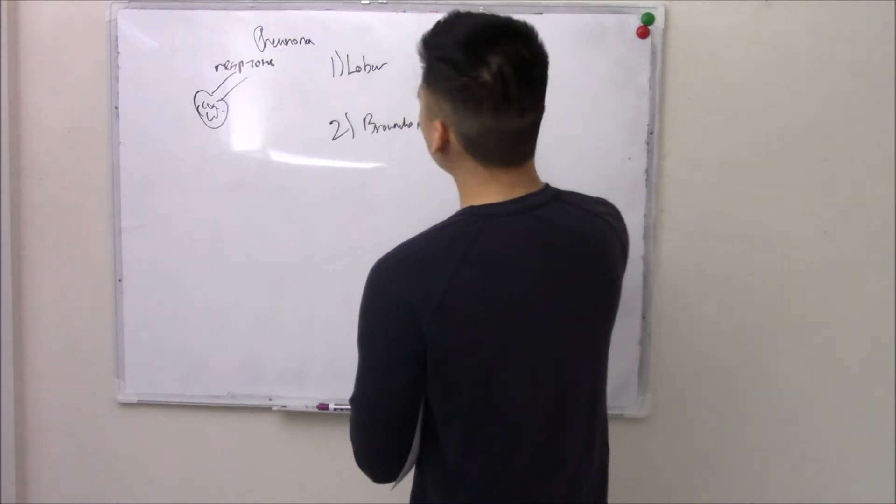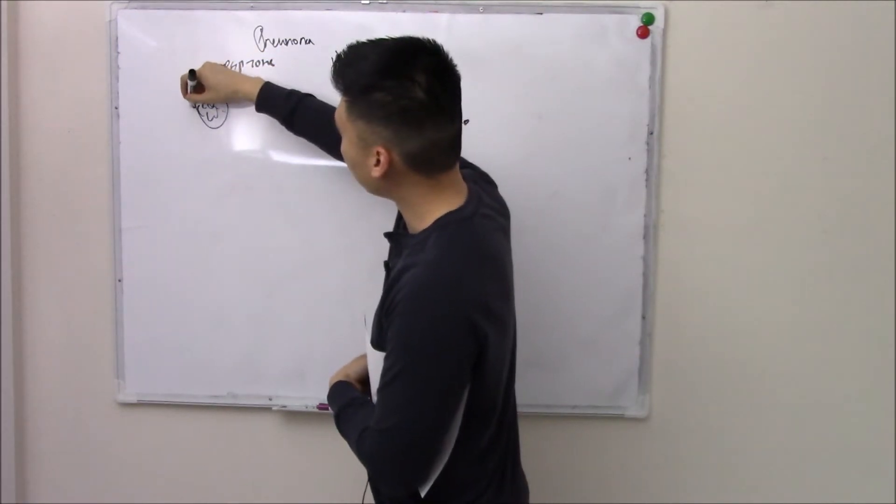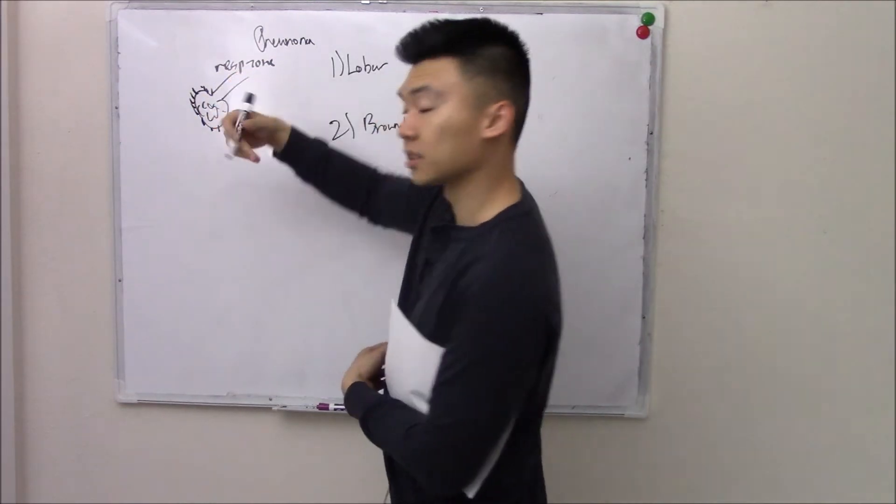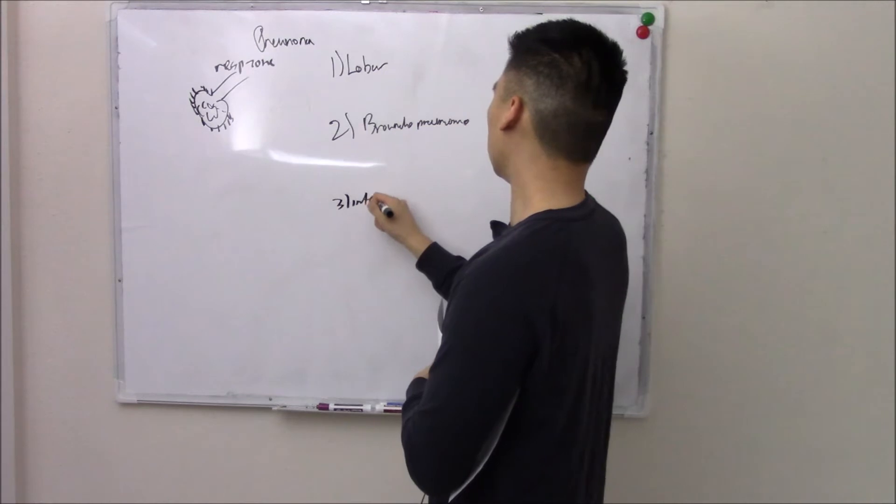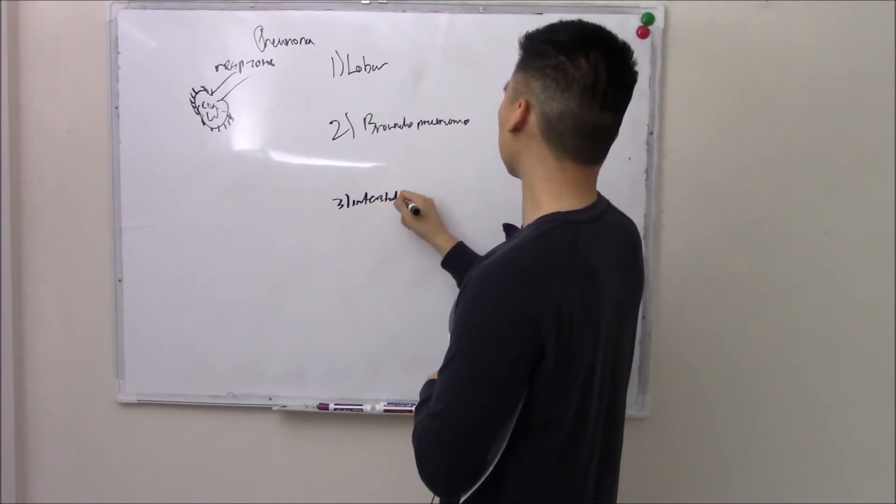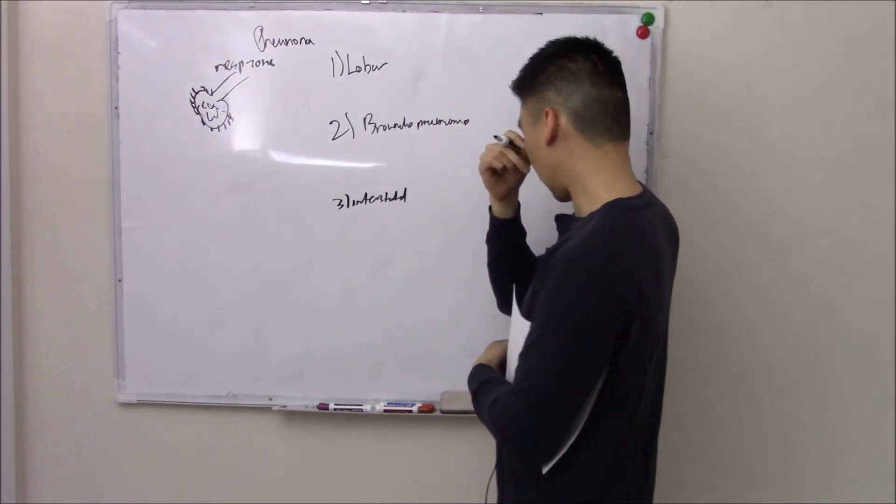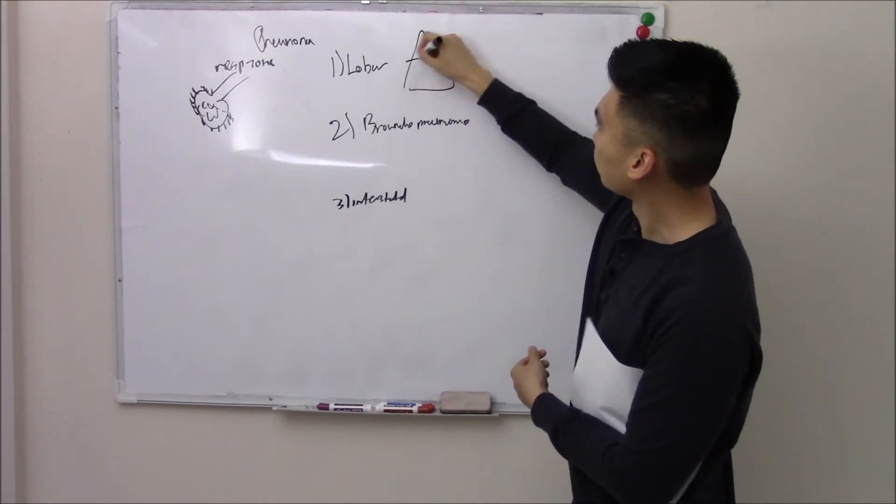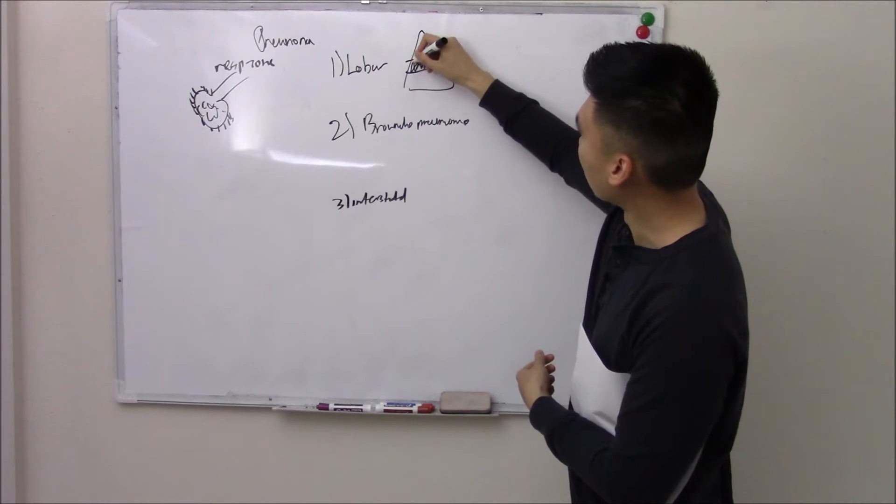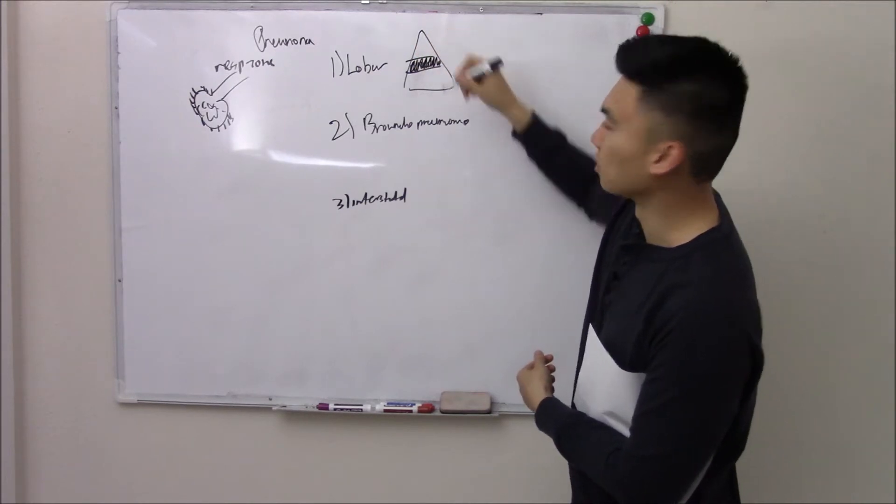And sometimes you affect the space outside your alveolar sac, your interstitial space. We call this interstitial pneumonia. And they all look different. If you take a lung and you cut it in half, biopsy it, you can actually see lobar pneumonia affecting a lobe. This affects this lobe.